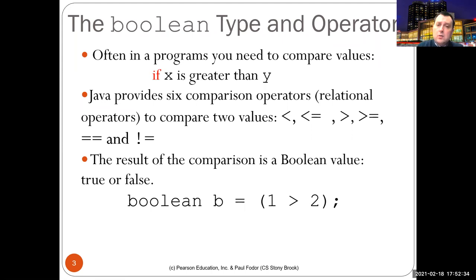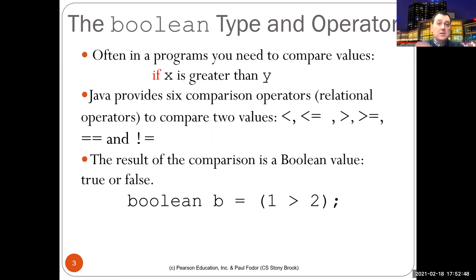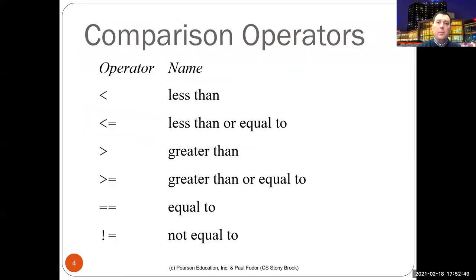The result of a comparison is a boolean value — true or false. For example, if we compare one greater than two, the result is false, and that false value is assigned to the variable b. So we evaluate the boolean expression and assign it to b. There are six operators for comparing numbers, similar to math.